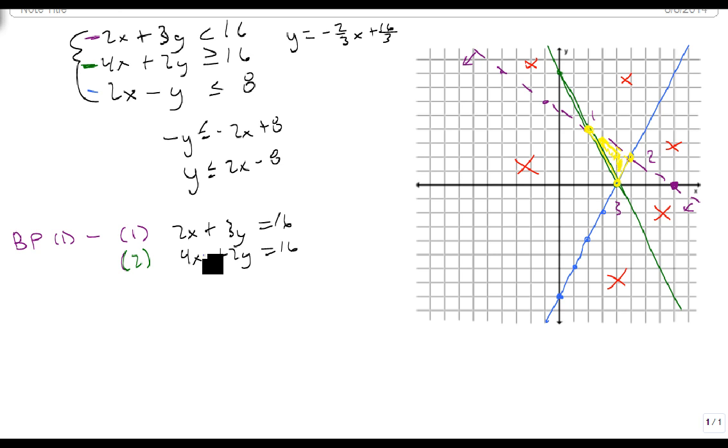So I'm going to use elimination. Let's do minus 4x minus 6y equals minus 32. That gives me a negative 4y equals a negative 16. Y is 4. If y is 4, then we get 2x plus 3 times 4 equals 16.